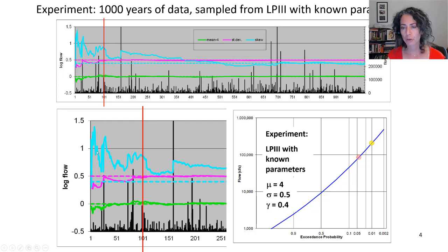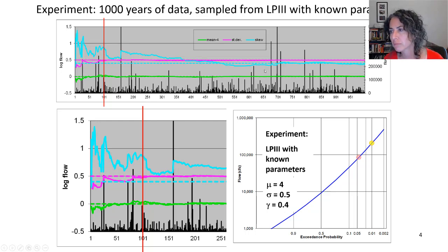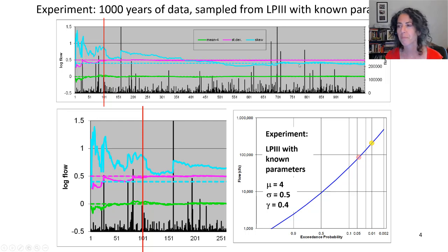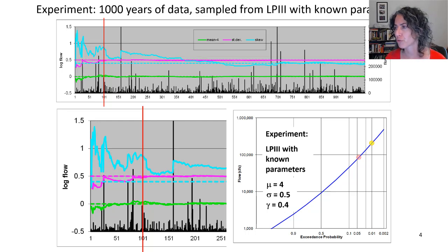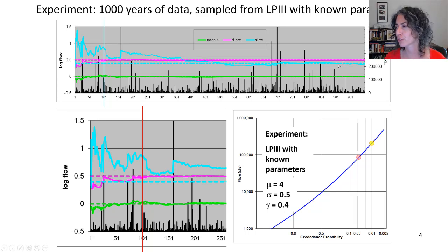The skew coefficient really isn't there by 250 years. Going back up to the 1,000-year view, the skew coefficient takes about 700 to 750 years to get to the population value. So it takes a long time to get the skew coefficient right, and therefore it's going to take a long time before we can get a good estimate of our population frequency curve.